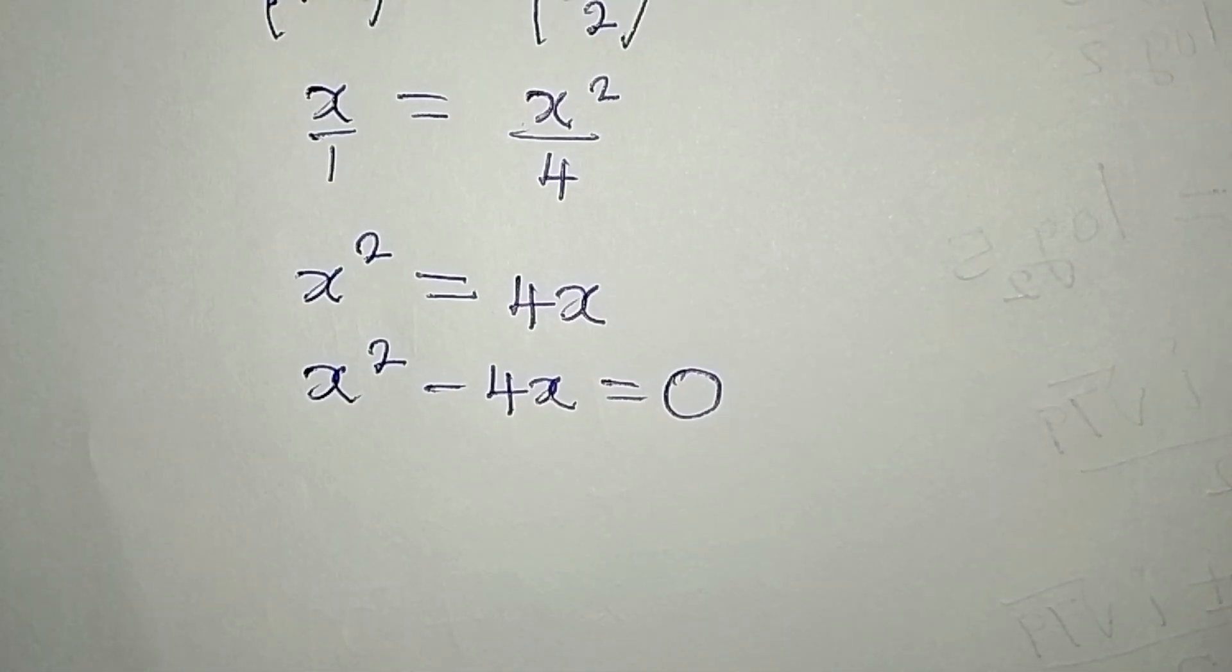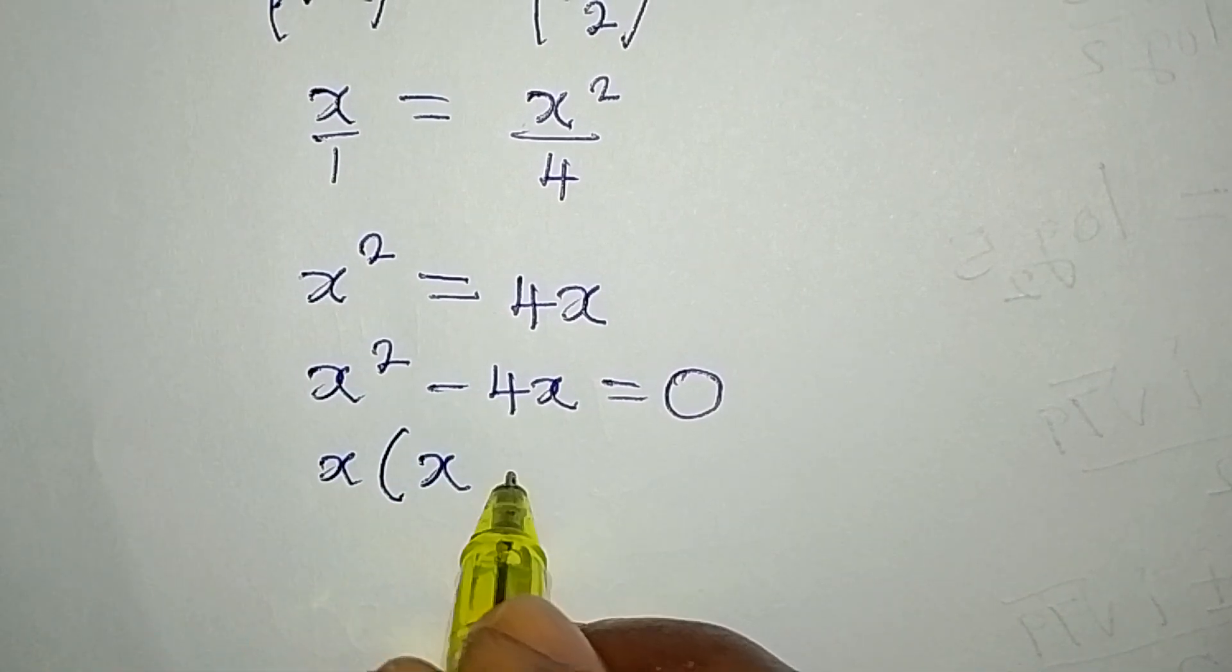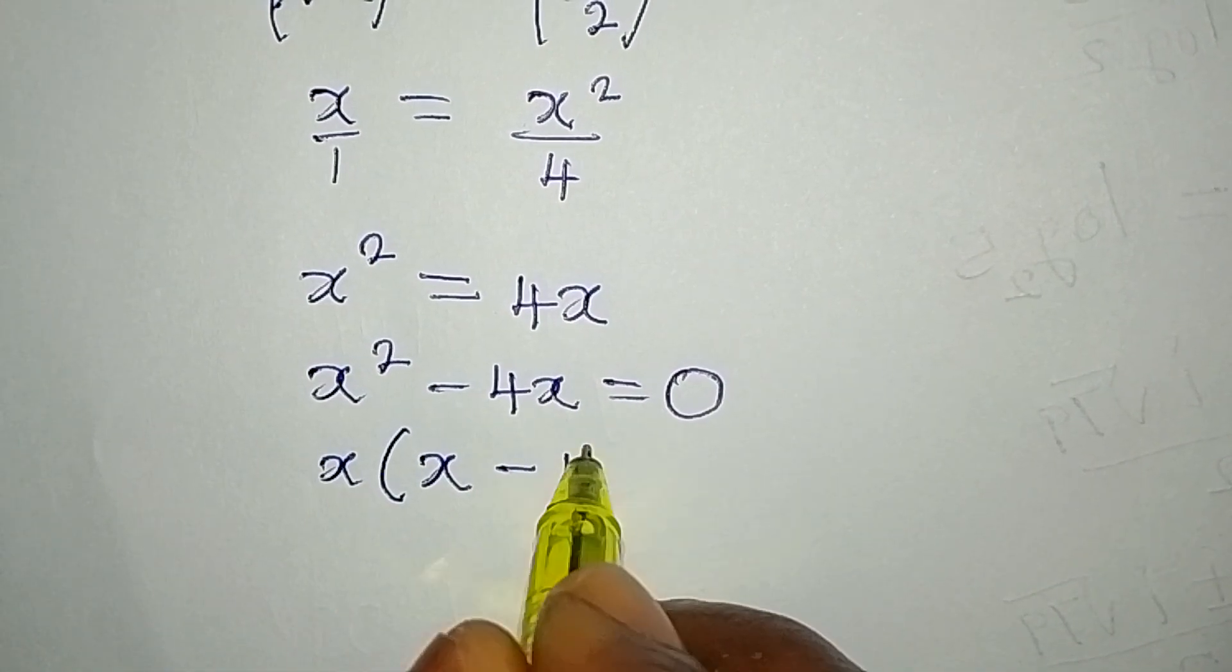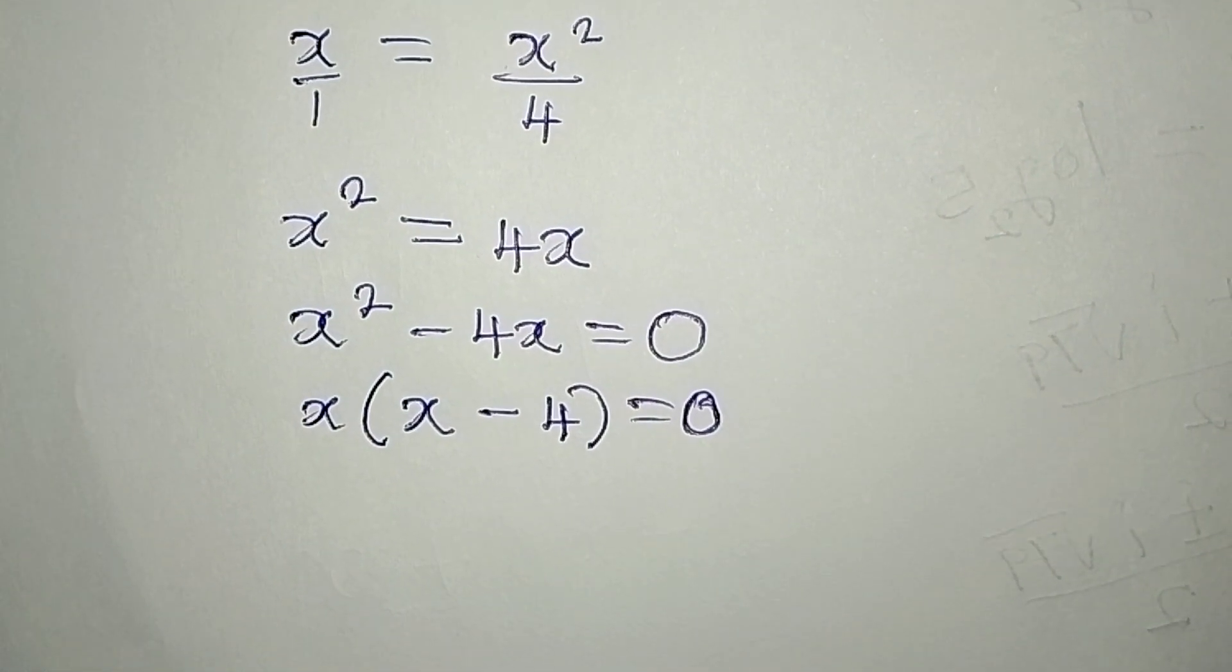Now what is common to both of them is x. Here we have x, then minus here we have 4. This is equal to 0. If you open the brackets, you have everything to be equal to 0.